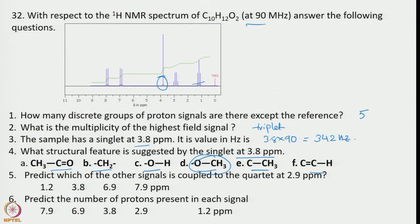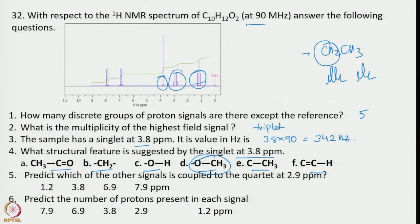Next, predict which of the other signals is coupled to the quartet at 2.9 ppm. If a quartet is present, in the neighbourhood there should be 3 protons. For example, consider CH2-CH3: the CH2 would be a quartet and CH3 would be a triplet. By looking at the signals and the separation of individual lines in these multiplets, we can tell it is coupled with the signal at 1.2 ppm.